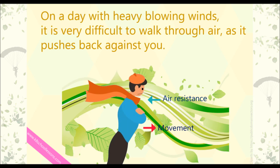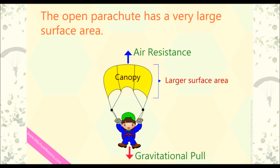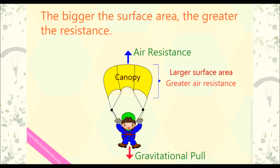On a day with heavy blowing winds, it is very difficult to walk through air as it pushes back against you. When a parachute falls down, air resists its movement, causing the parachute to fall slowly. The open parachute has a very large surface area. The bigger the surface area, the greater the resistance.